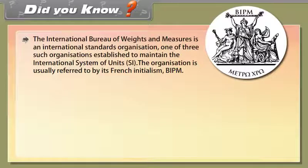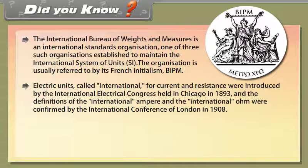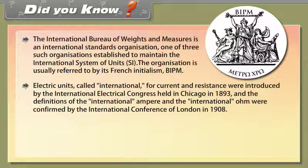Did you know? The International Bureau of Weights and Measures is an international standards organization, one of three such organizations established to maintain the international system of units SI. The organization is usually referred to by its French initialism BIPM. Electric units called international for current and resistance were introduced by the International Electrical Congress held in Chicago in 1893, and the definitions of the international ampere and international ohm were confirmed by the International Conference of London in 1908.